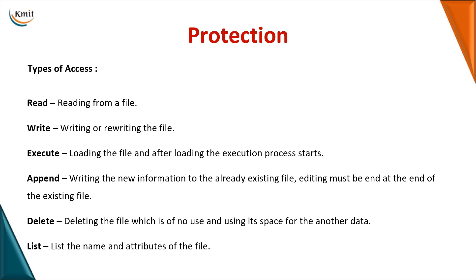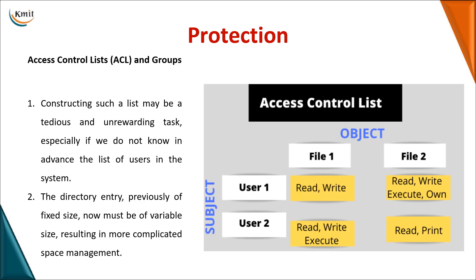First we need to know the types of access that can be provided on a file. You can perform a read operation, a write operation, or execute a file. You can append data to an existing file, delete data, or just list the contents or attributes of the file. These are the types of access.